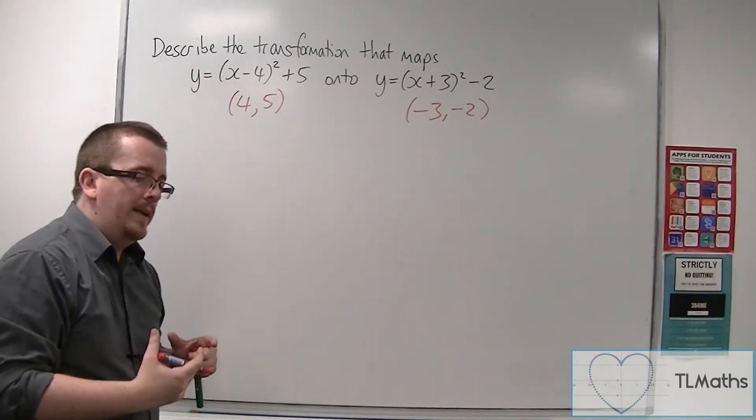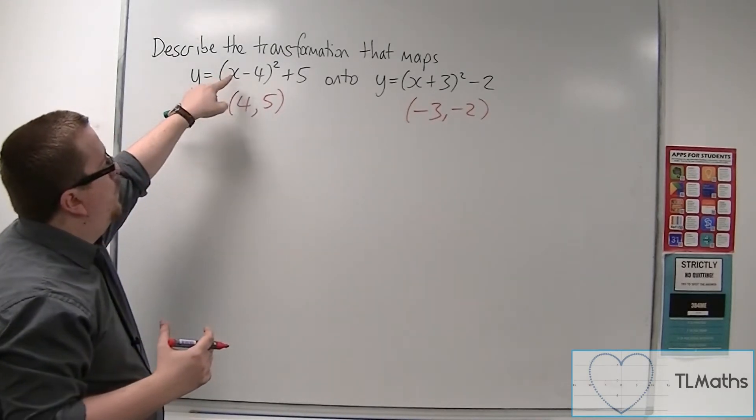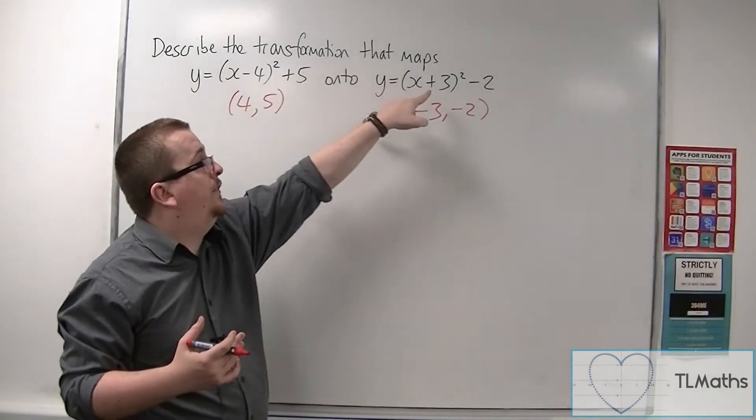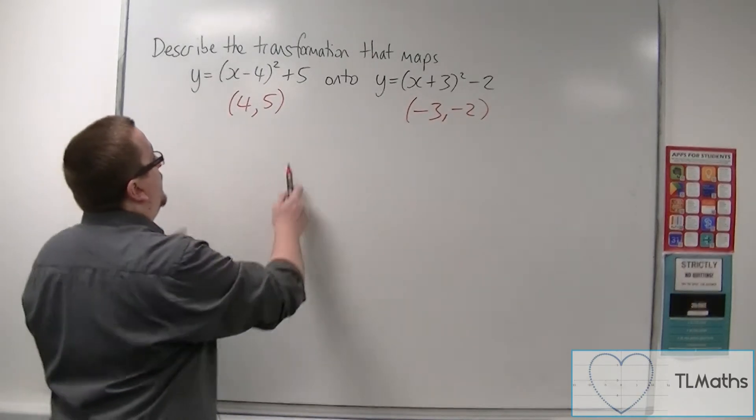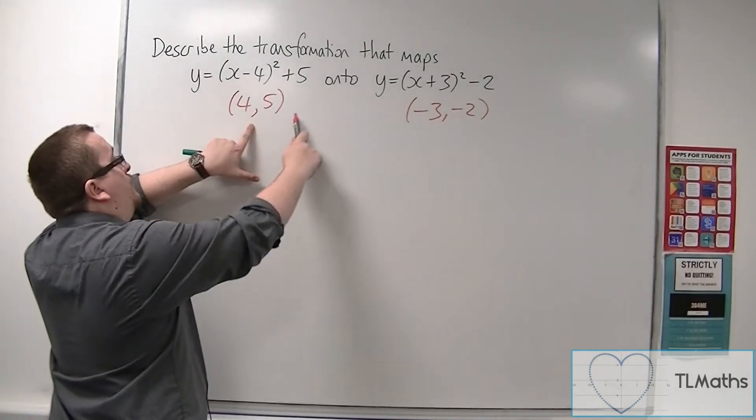So what's happening is that this curve, which has exactly the same shape as that curve, it's just in a different position, is being moved so that its vertex is being moved from 4, 5 onto minus 3, minus 2.